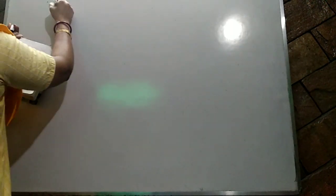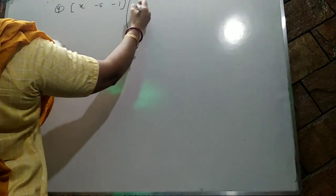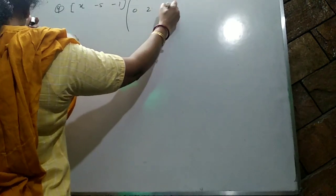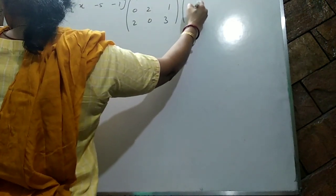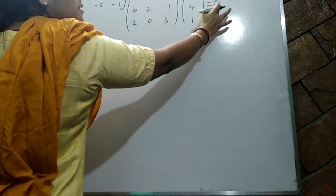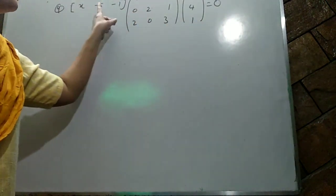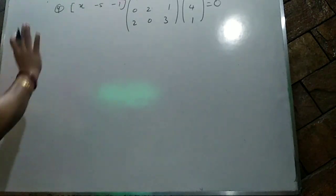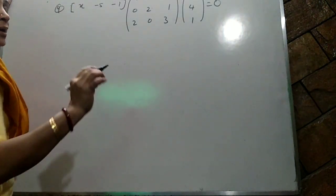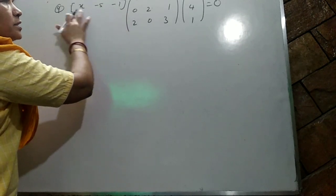The first matrix is 1×3, the second is 3×3, so their product is 1×3. Then 1×3 times 3×1 gives a 1×1 matrix — a single element. First, multiply the row [x, -5, -1] by the 3×3 matrix. First row with first column: x plus 0 minus 2 equals x minus 2. First row with second column: 0 minus 10 plus 0 equals -10. First row with third column: 2x minus 5 minus 3 equals 2x minus 8.